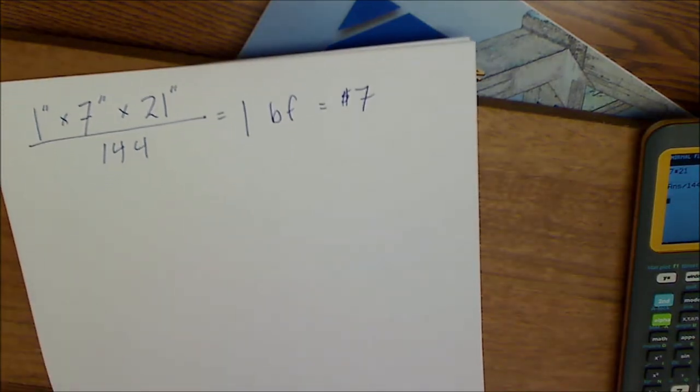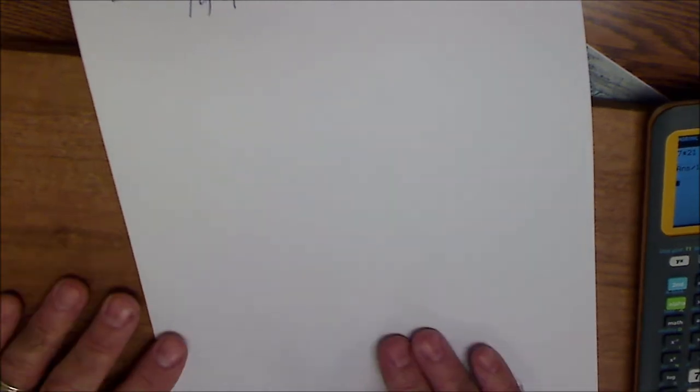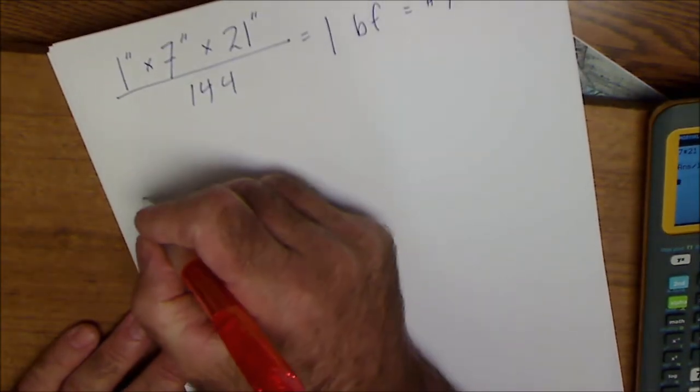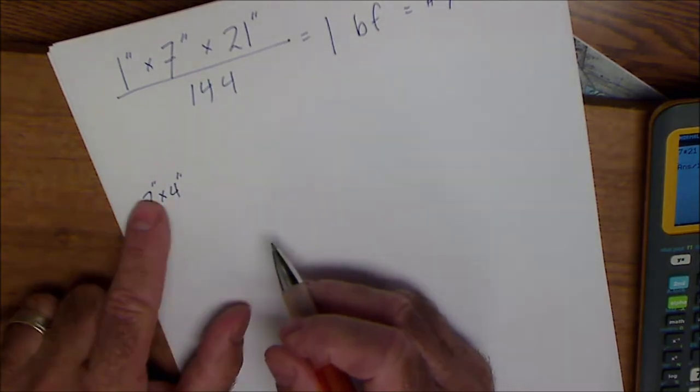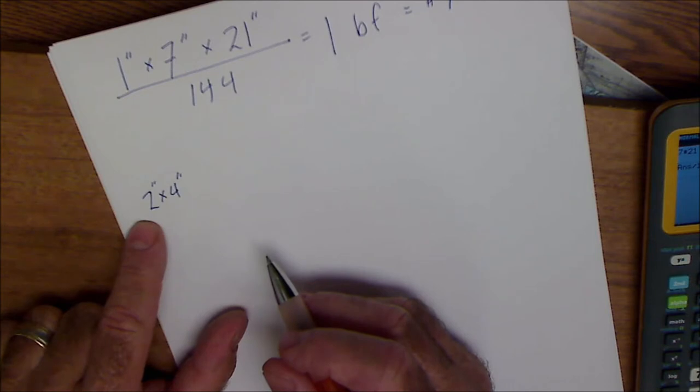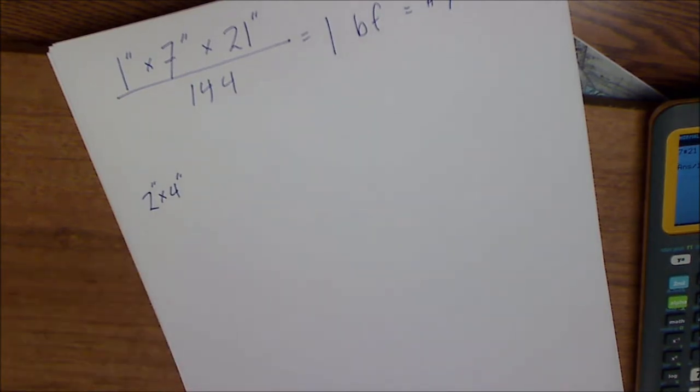If on the other hand I'm using construction lumber and I have a two by four, I use the other formula for this one. So let's say I have a two by four. So two inches by four inches. Even though that's one and a half by three and a half, it still gets rounded up to the full dimension.